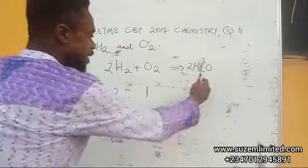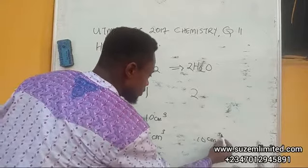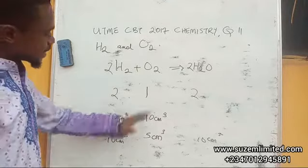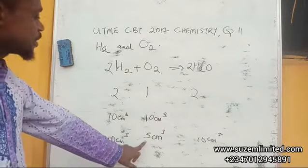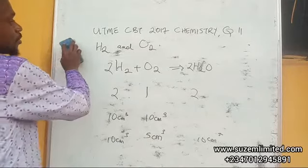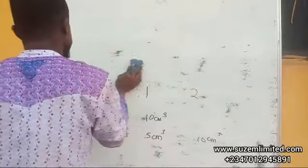This is the only thing that can make it to be in this ratio of two is to one. And here becomes 10 cm³. It's clear that only 5 cm³ of oxygen was used in this reaction.